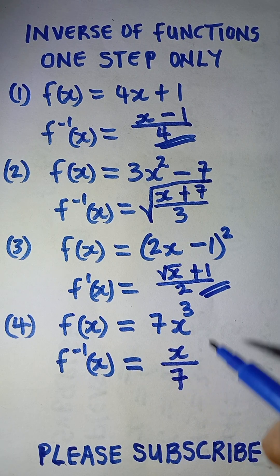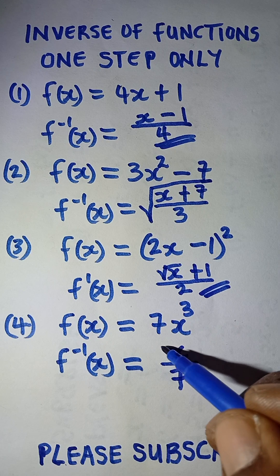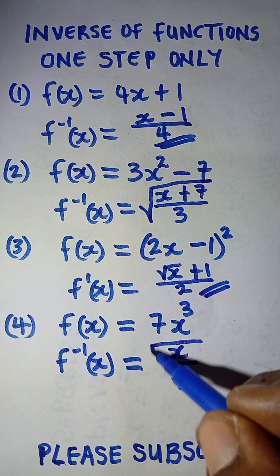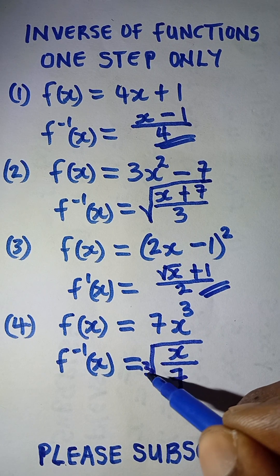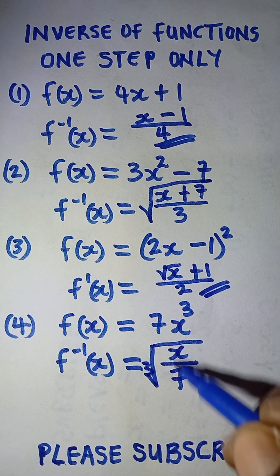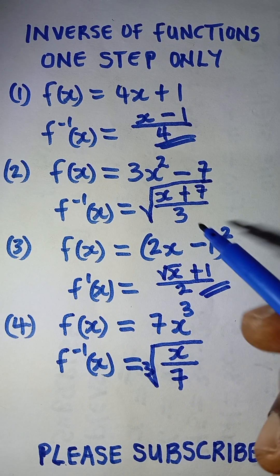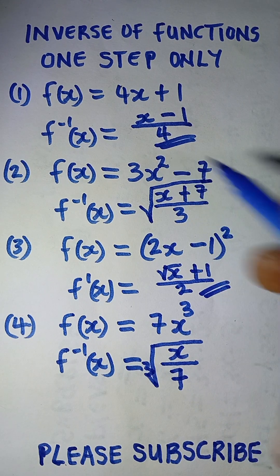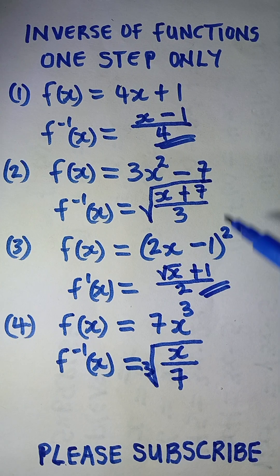And then because of the cube here, you take the cube root, or the third root, of this whole value. This one is similar to this that has square, and this one has cube, so they are similar.